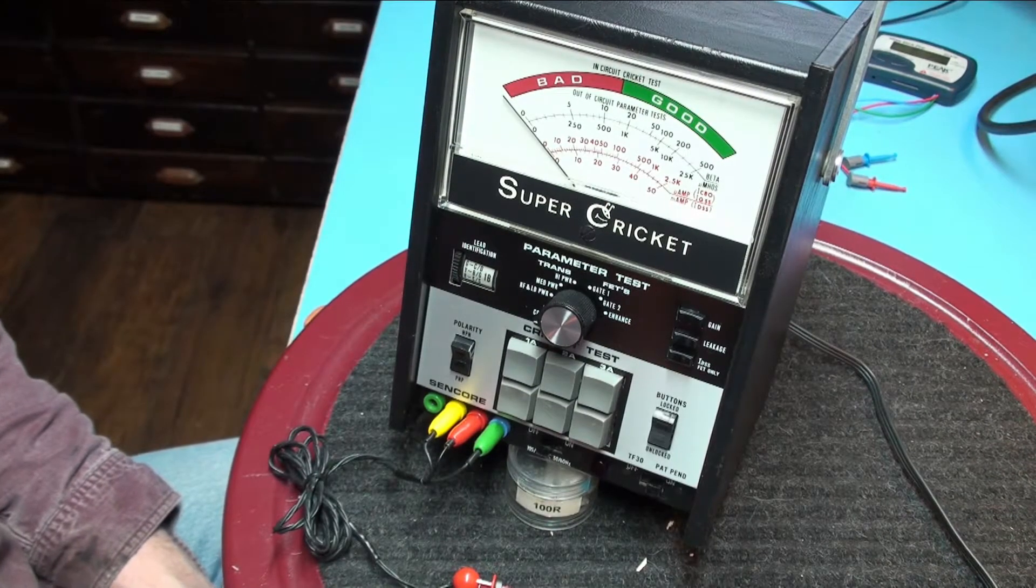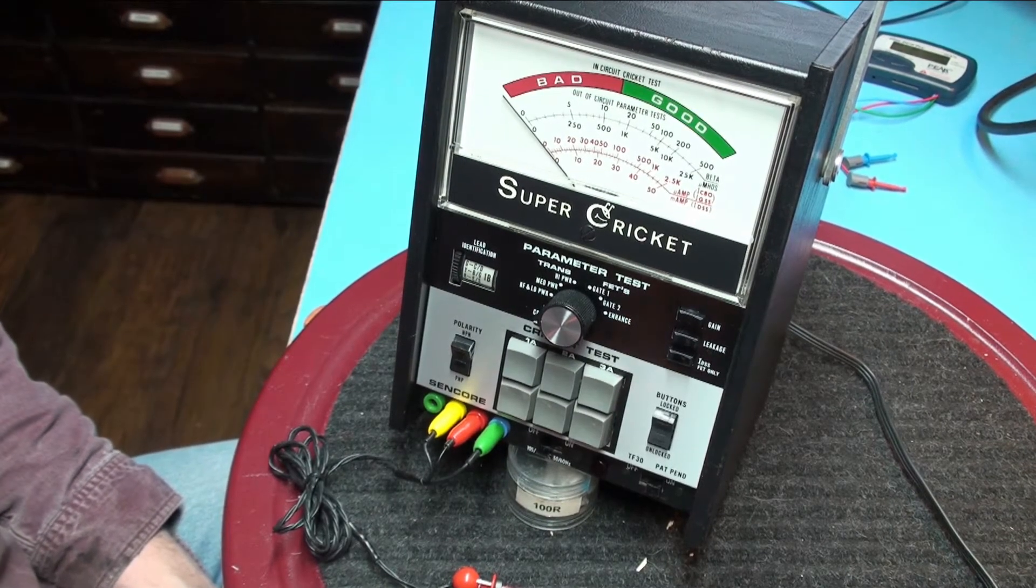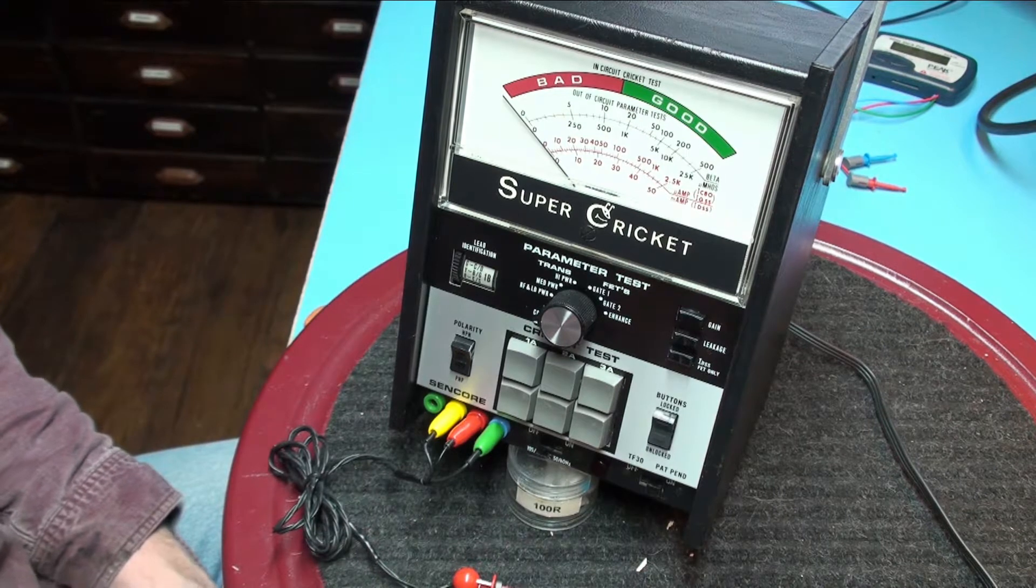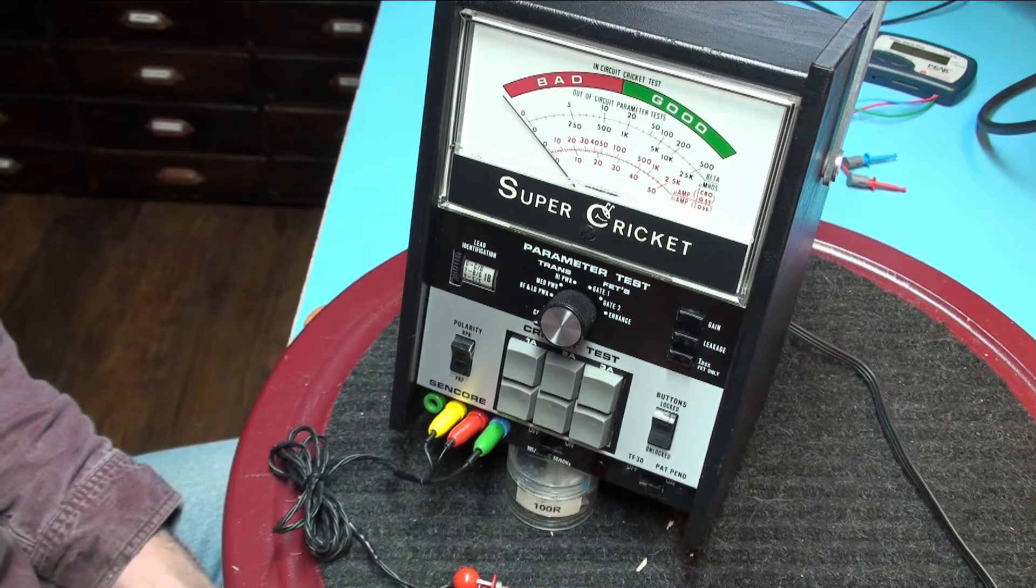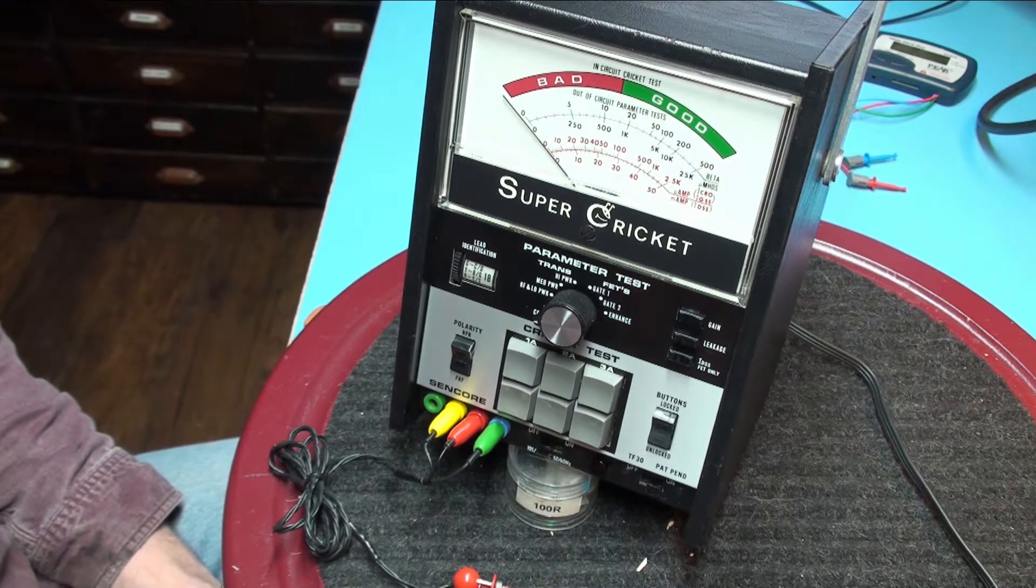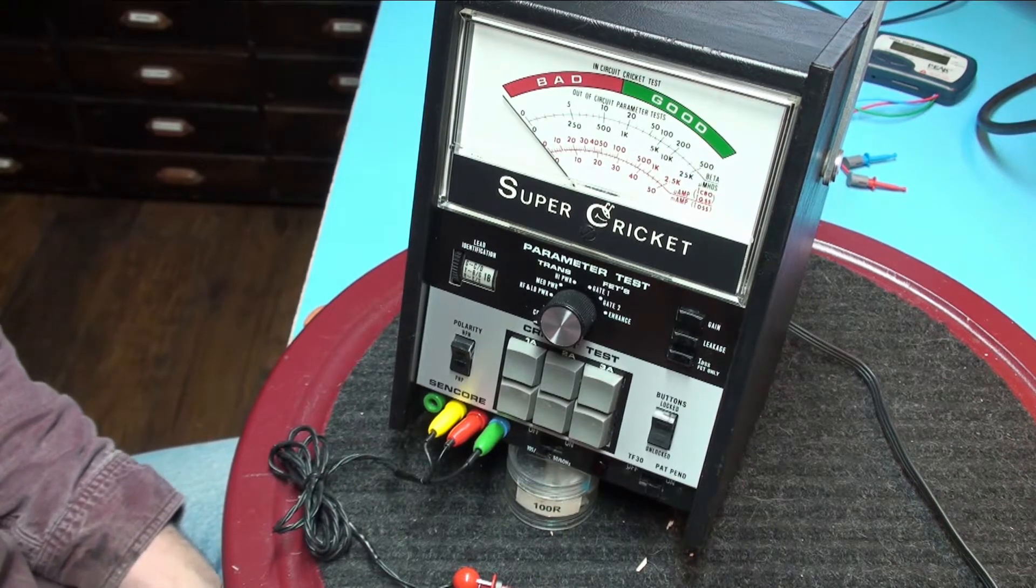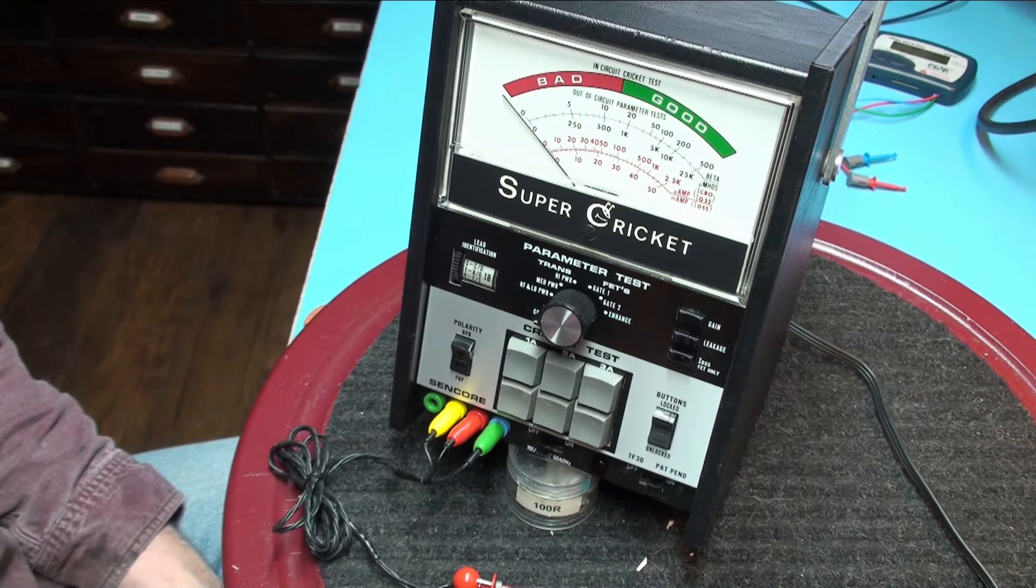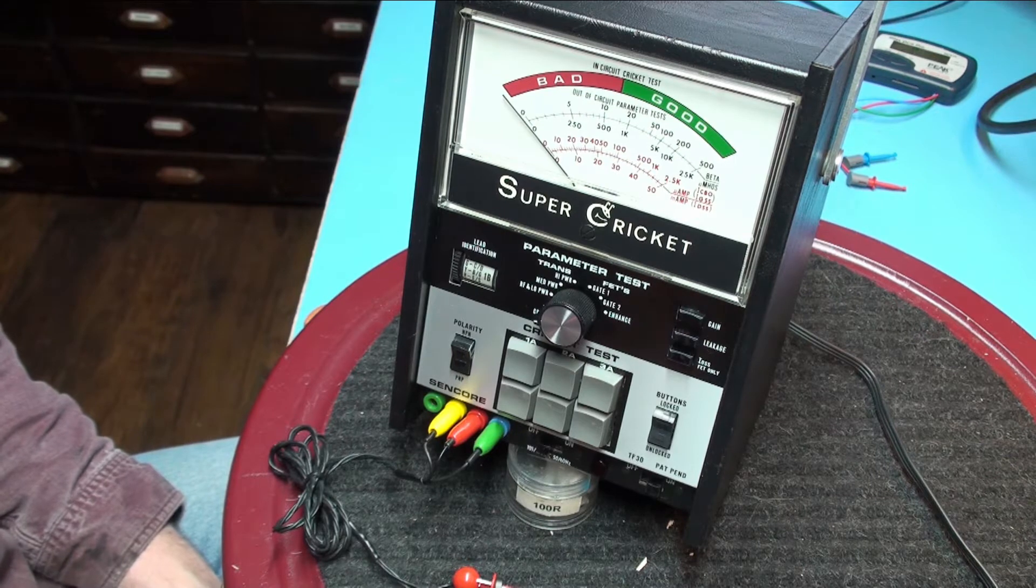So what can a Super Cricket do for you? Basically it allows you to test any transistor or FET in or out of circuit with no technical experience. You have automatic lead coating and biasing selection.